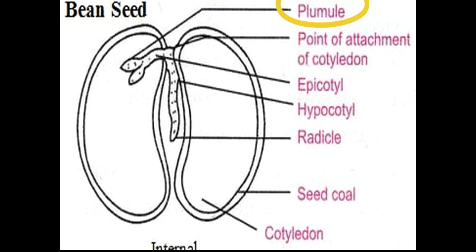The plumule is the second half of the embryo and produces the first leaves of the plant. After the radicle breaks through the micropyle and begins to descend into the soil, the plumule swells, pushing up through the testa and soil until it reaches the sunlight.